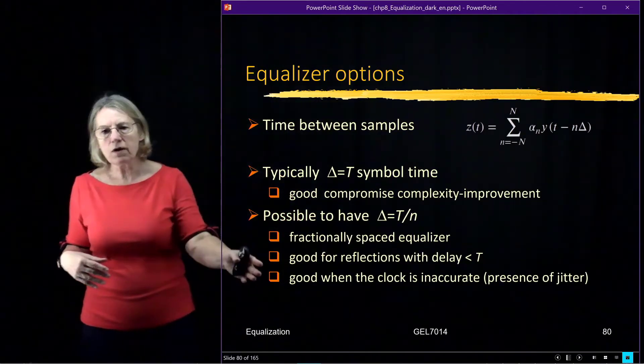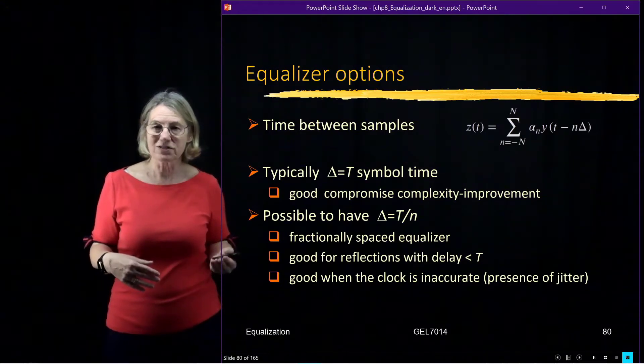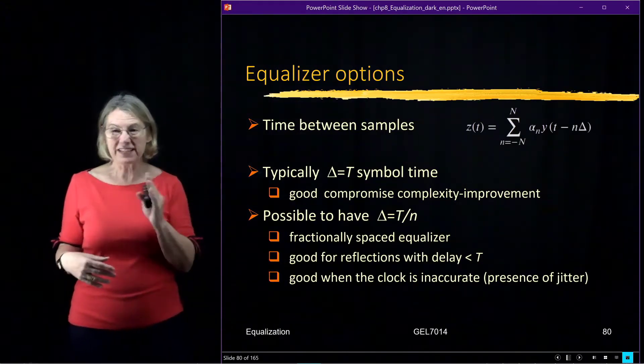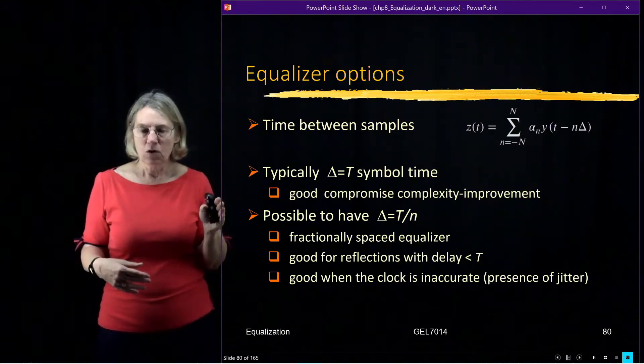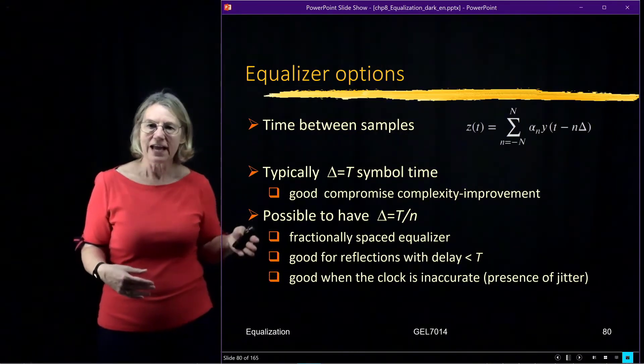It's also a way of hedging performance in the presence of a clock which is not very stable. So if the clock has a lot of jitter in it and your sampling times are not exact, well then oversampling will be able to automatically correct for that without actually improving your clock.